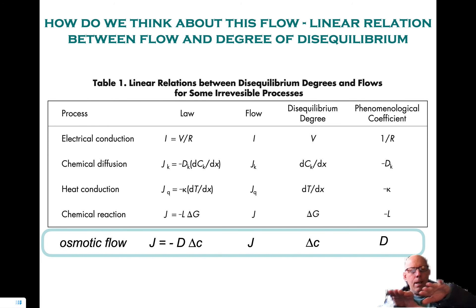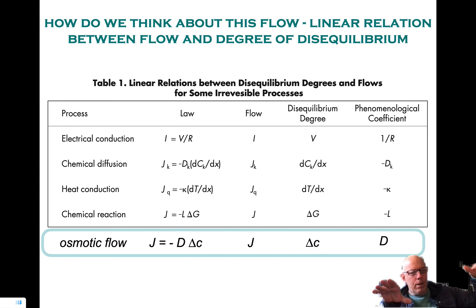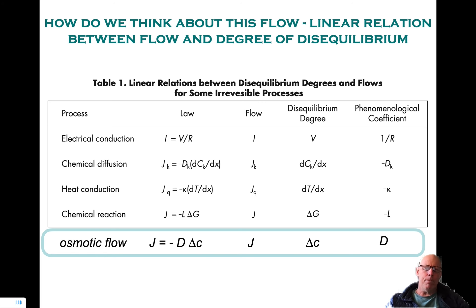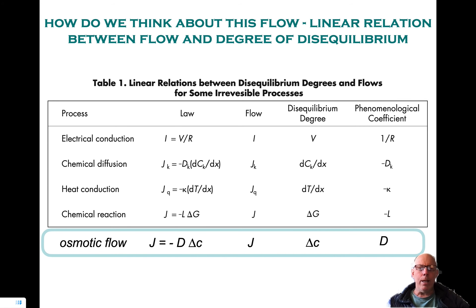Let's take the second row: chemical diffusion. dc/dx is the gradient in concentration — it tells me that the concentration is not uniform but has some slope to it. The bigger the slope, the more out of equilibrium the system is. The law says that the flow of matter j_k is linearly related to the degree of disequilibrium, and the coefficient relating those two quantities is the diffusion coefficient.